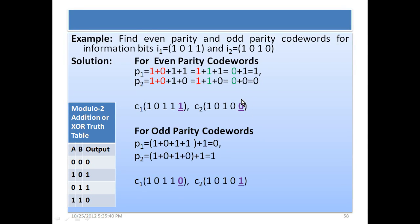For odd parity codewords, the process is very similar — the only difference is that 1 is added after the modulo 2 addition of information bits. For i1 = 1011, the modulo 2 result was 1; adding 1 gives 1 ⊕ 1 = 0. So for odd parity, p1 = 0. For i2 = 1010, the even parity result was 0; adding 1 gives 0 ⊕ 1 = 1. So p2 = 1 for odd parity. As you can see, the odd parity bit is always the complement of the even parity bit.